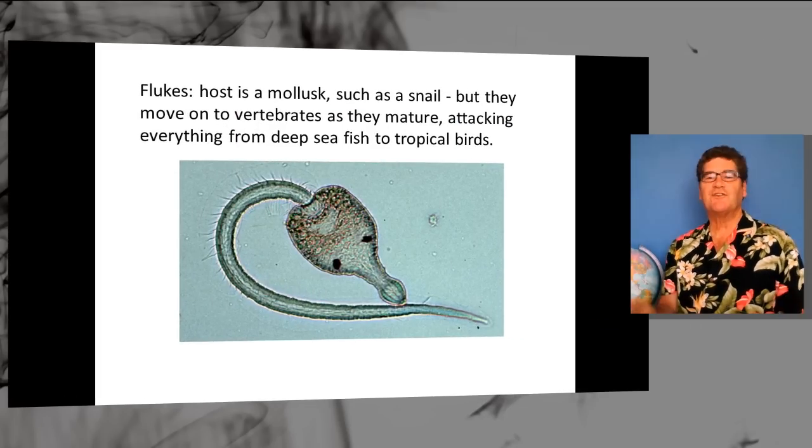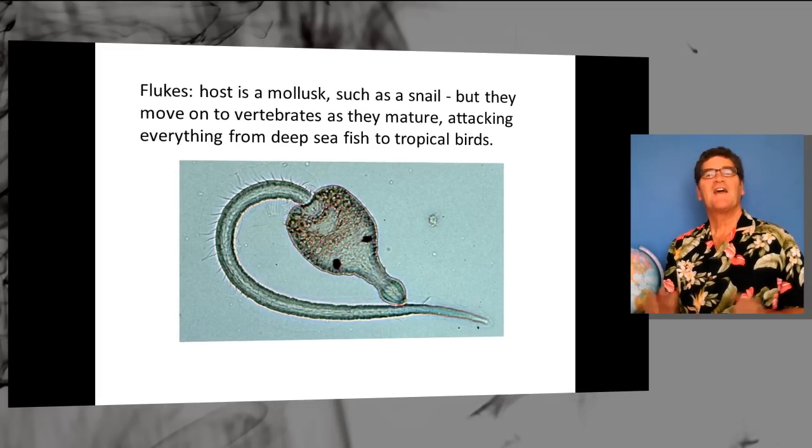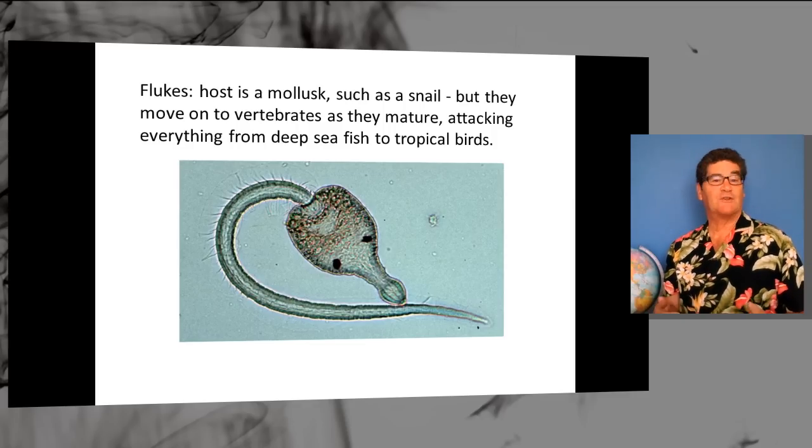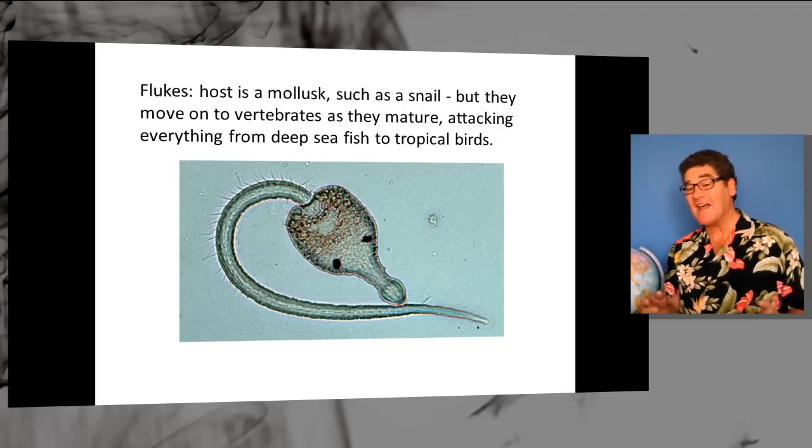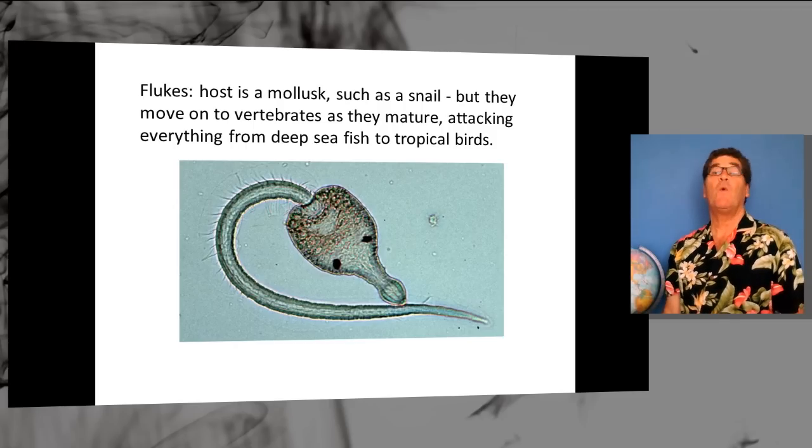Flukes, look at this adorable little fluke. Their host is a mollusk, such as a snail. They move on to vertebrates as they mature, attacking everything from sea fish to tropical birds, and mammals. And hey, we're a mammal.